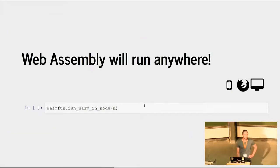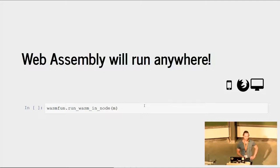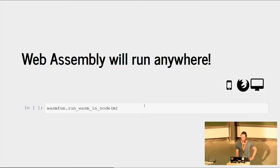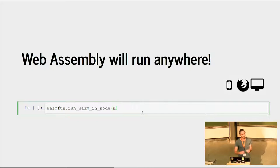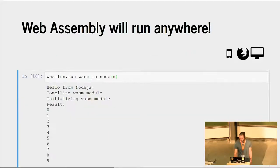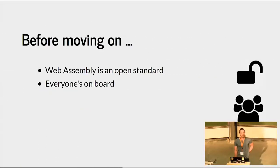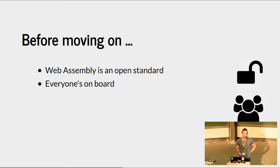Another nice thing about WebAssembly is that although it is designed for the web to run in the browser, it is extremely likely that it will run on mobile devices as well, and it already runs on the desktop using Node, but there are also other projects where you can run WebAssembly on the desktop. That means any code you can get into the format of WebAssembly will eventually run anywhere. Here we have a function run_wasm_in_node, which is Python calling out in a subprocess to Node and running the WebAssembly module, and we get the same result on the desktop. Also important: WebAssembly is an open standard — not owned by anyone — with people from Mozilla, Google, Microsoft, and Apple all collaborating on making this work.